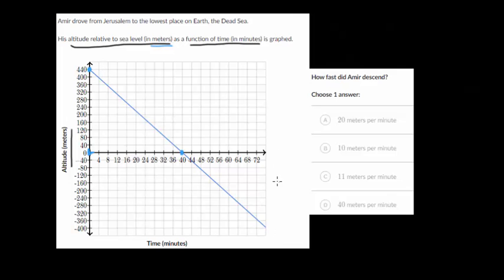And it looks like by, this would be 76 seconds, that Amir would reach his lowest point, which is somewhere around minus 400 meters below sea level. We want to know, how fast did Amir descend?